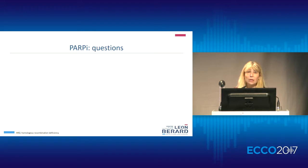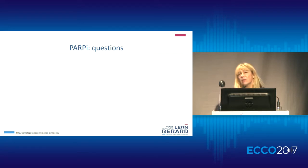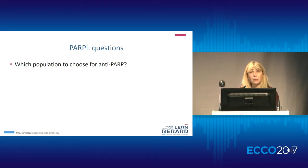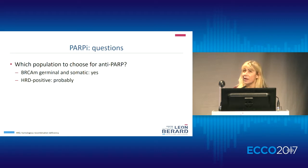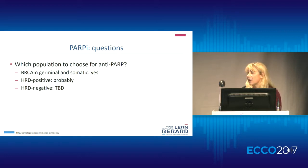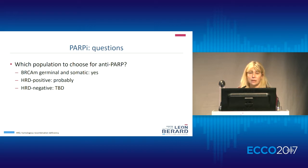Perhaps in the near future we can also introduce niraparib. But now, for PARP, what is our most important question? For me, it is to define the best population. Probably BRCA mutated germline and somatic is clearly one of the most important and most interesting populations. But also HRD seems very promising. Concerning HRD negative, I think we need more data to consolidate the NOVA trial, but it seems to be really interesting.